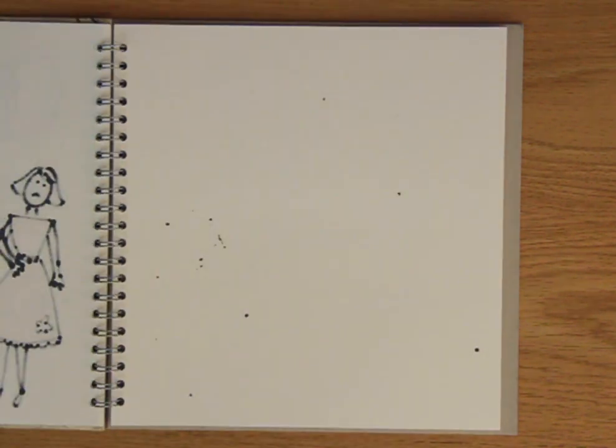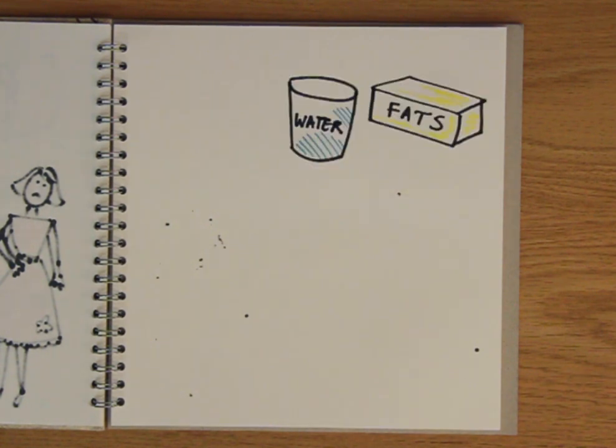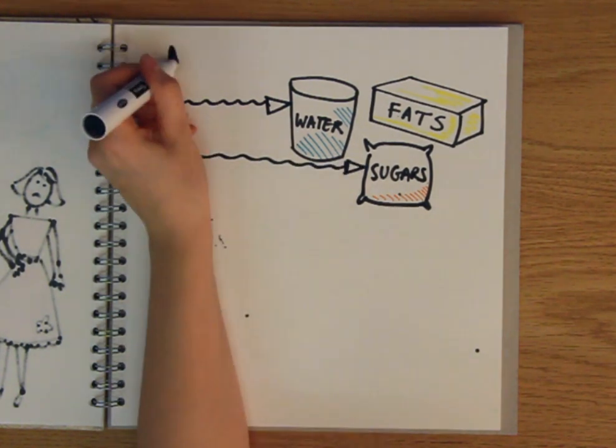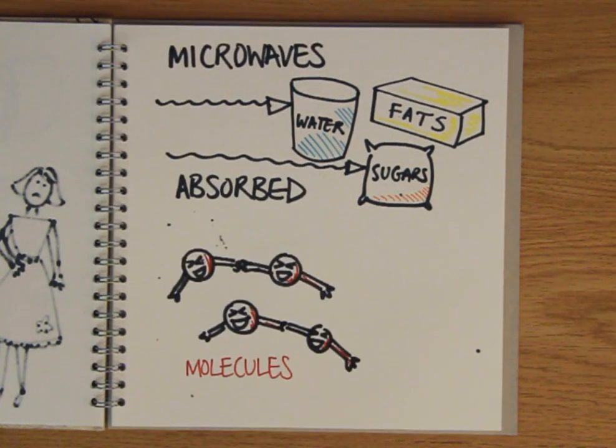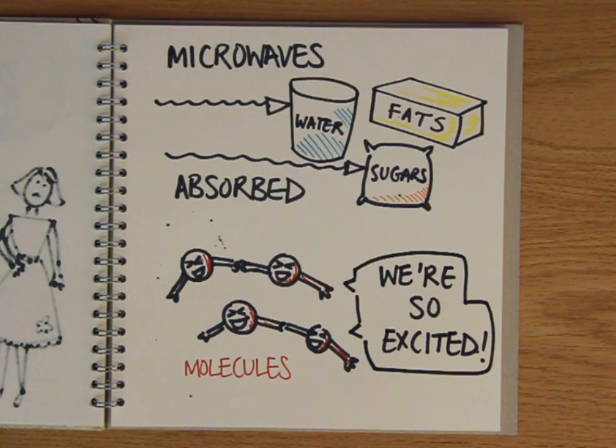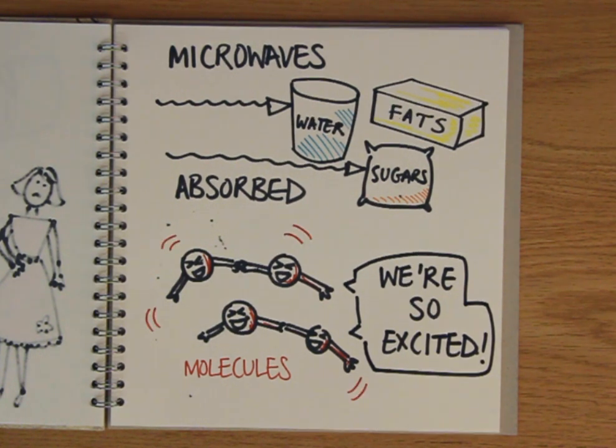But why should blasting something with microwave radiation cause it to heat up? The answer lies in the particular wavelength of the microwaves that are used for this purpose. Waves of this length and frequency are very well absorbed by water, fats and sugars, basically the main constituents of food. When these molecules absorb the microwaves, they get all excited, which makes them jiggle about and heat up.